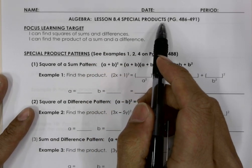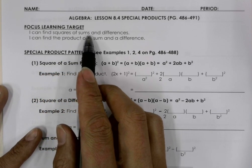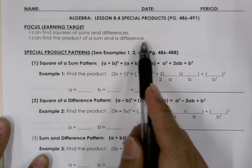Here we have special products, and the focus learning target is I can find squares of sums and differences, and I can find the product of a sum and a difference.